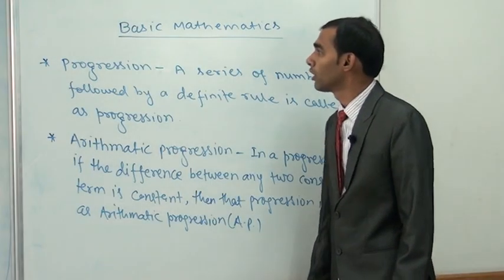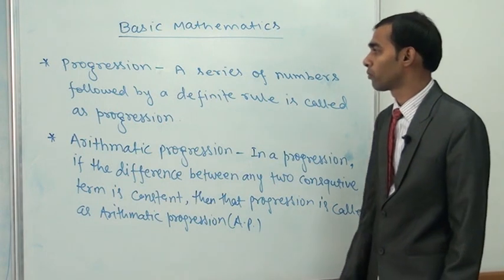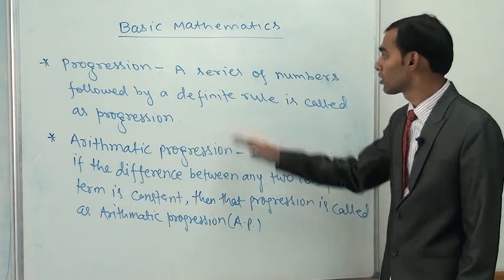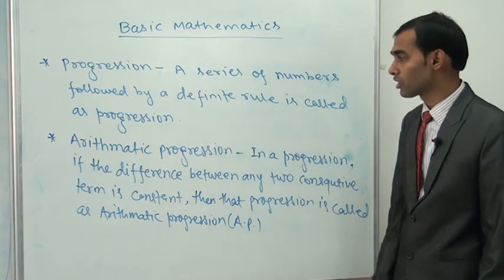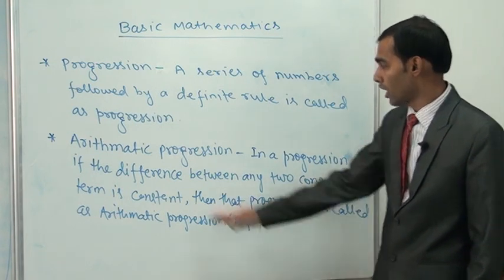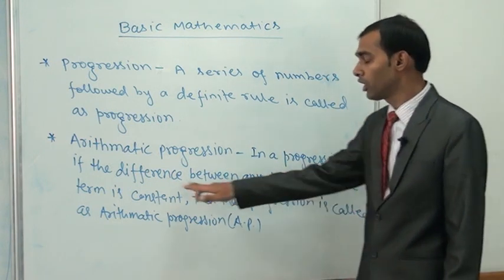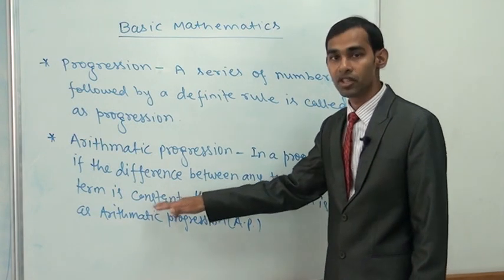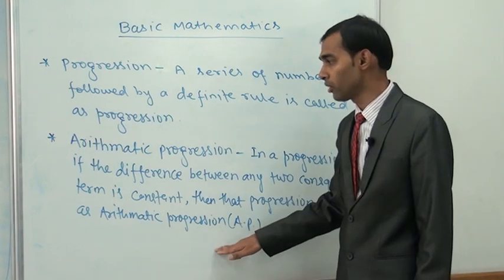Today I am going to deal with the progression. A progression of numbers followed by a definite rule is called a progression. There are several types of progression. A famous progression is arithmetic progression. In a progression, if the difference between any two consecutive terms is constant, then that progression is called an arithmetic progression.